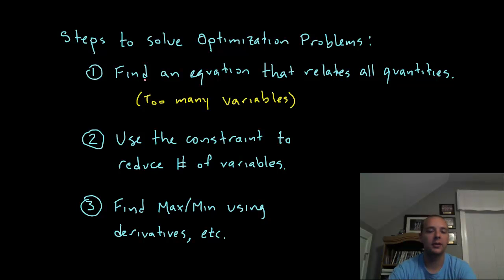Now, the consistent thing in all these optimization problems is that equation will typically have too many variables. So next, number two, use the constraint that you're given to reduce the number of variables. Knock it from three independent variables down to one, or two to one, or five to one. And then it's like a normal calc one problem. Find the maxes and mins using derivatives and critical points and increasing and decreasing intervals and all that good stuff that we know how to do.